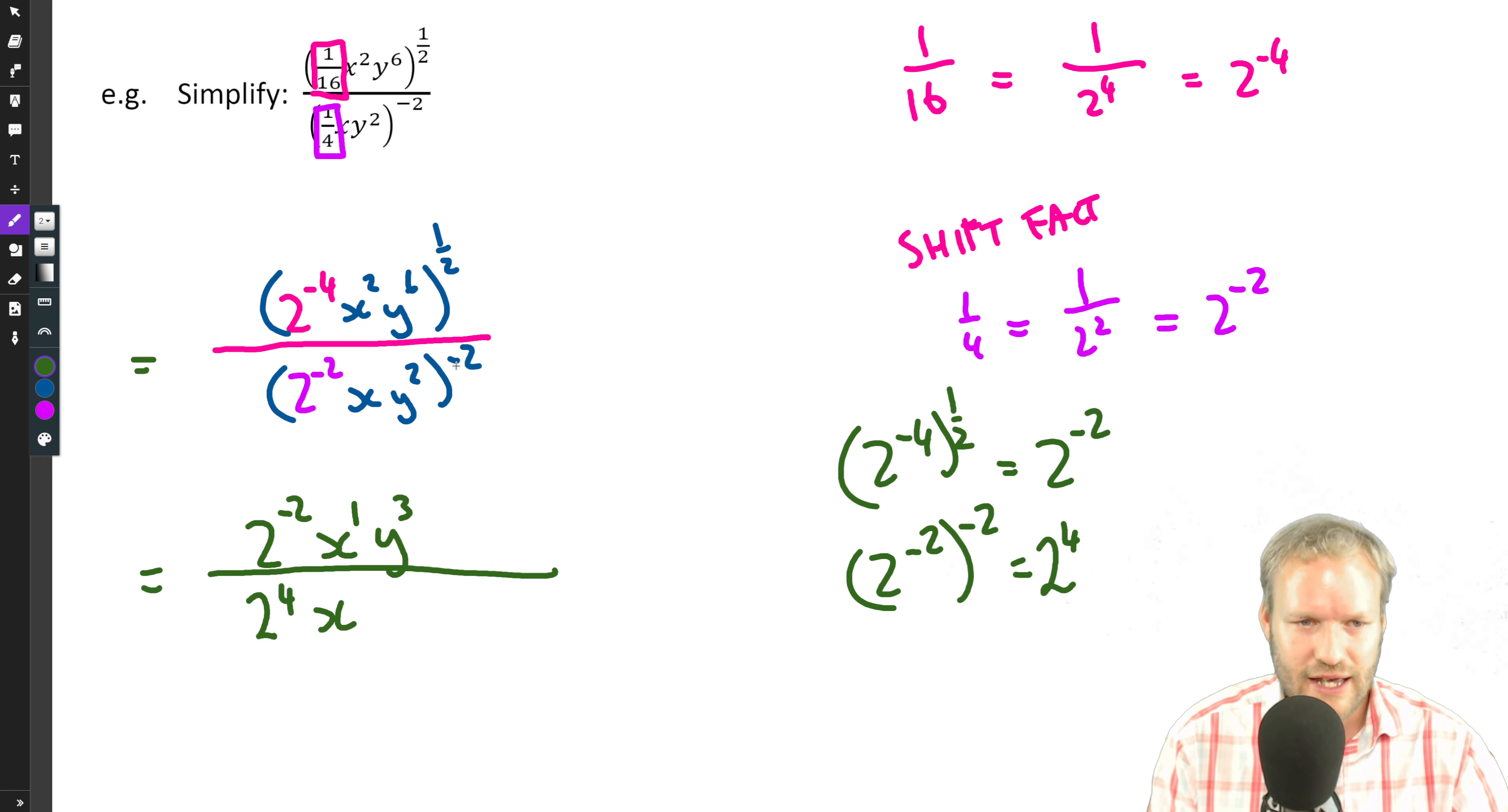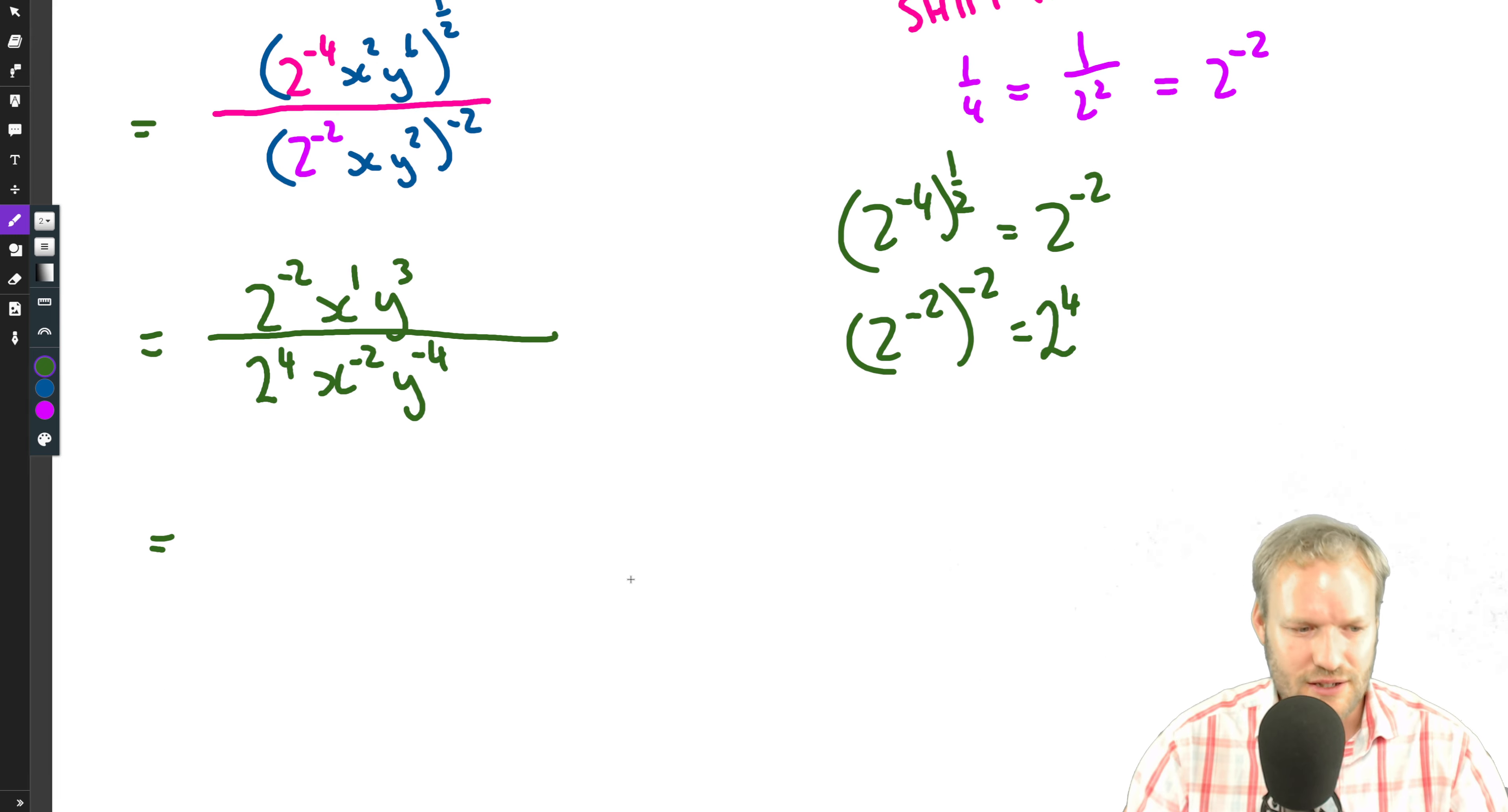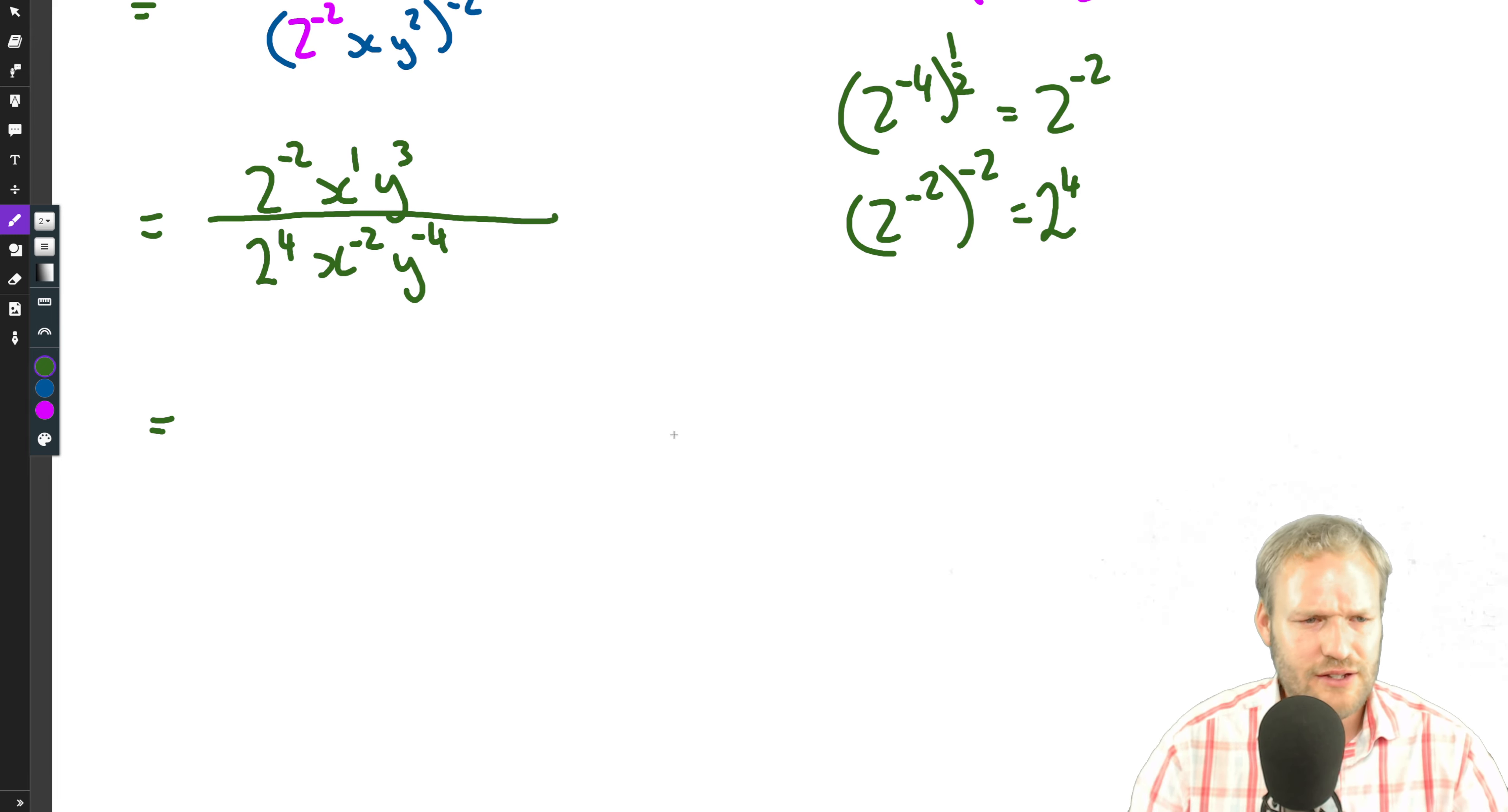The rest isn't too bad, similar to what we've been doing so far. So we've got x to the minus two and y squared to the minus two, multiply exponents, negative four.